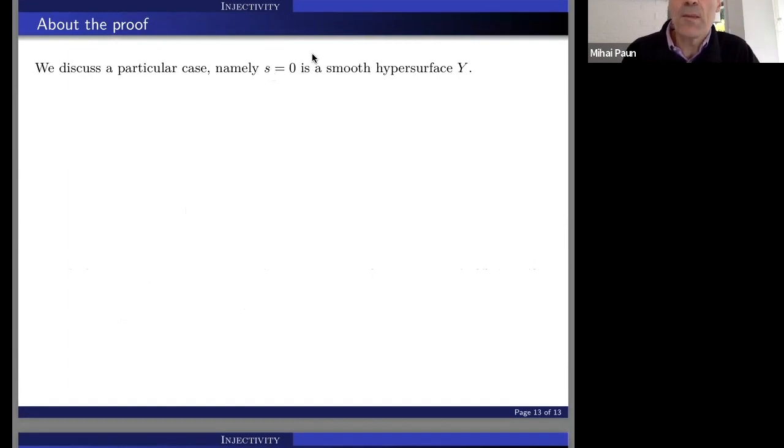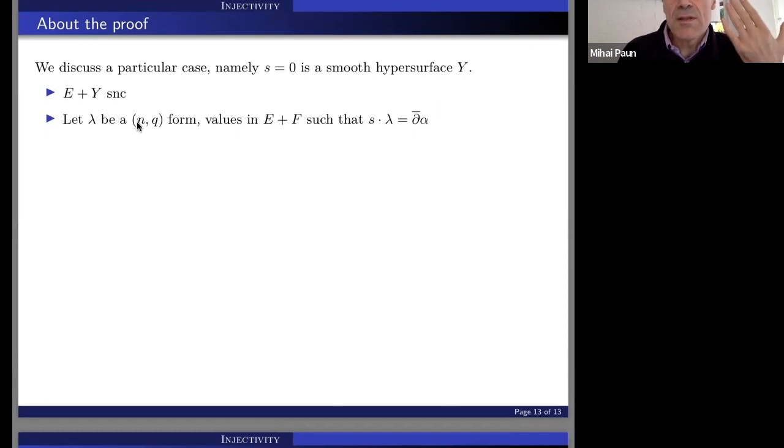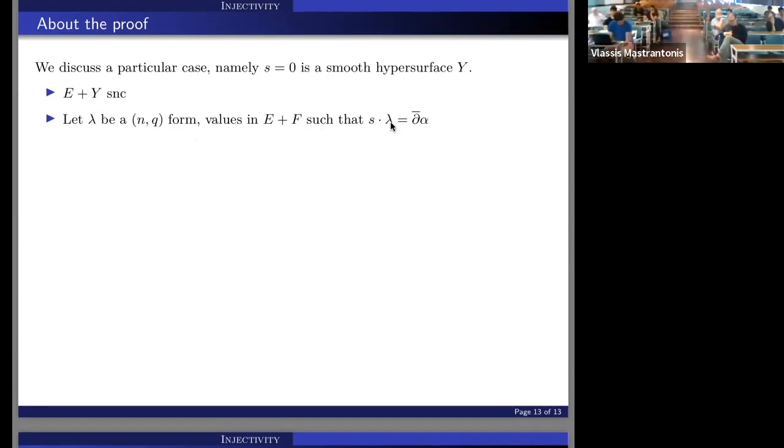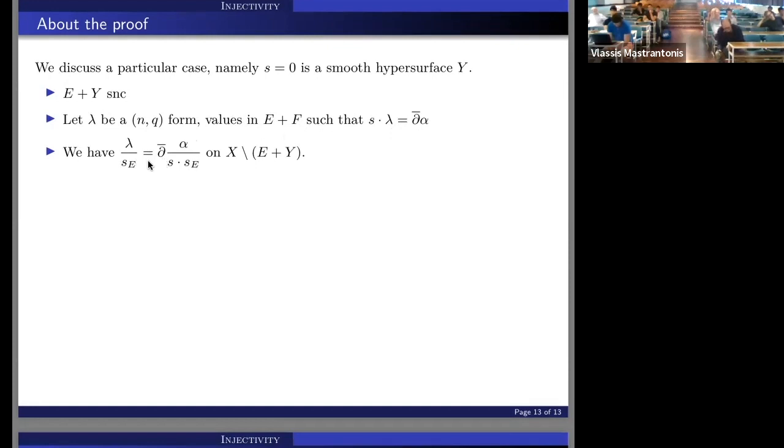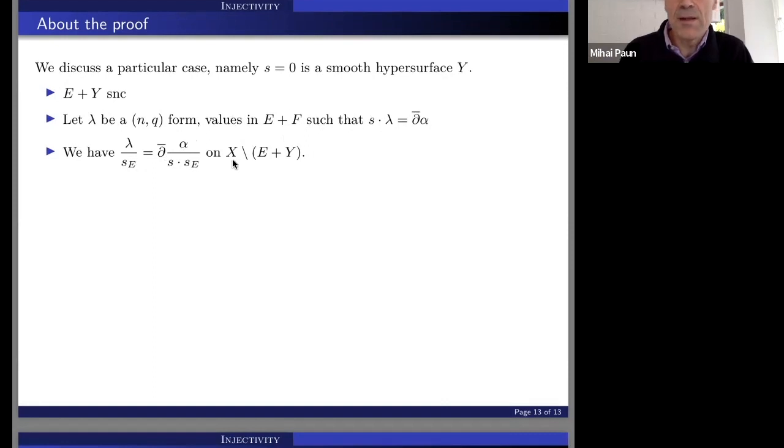So let's see what this has to do with the d-bar lemma. So I will only discuss a very particular case when this zero set of the section which gives the map is a smooth hypersurface. It's Y. And then things, since we have this hypothesis that s restricted on any intersection is non-identically vanishing, then of course the sum here would be, we have a simple normal crossing. And then so let's take an n,q form alpha with values in this E plus F, such that when we multiply it with s, then it becomes d-bar exact. And then we will do something horrible. We will divide by s and s_E. So of course, this equation will still hold, but naturally in the complement of the zero set of those, because I mean, we didn't solve the problem, right? We just reformulate this equality here.